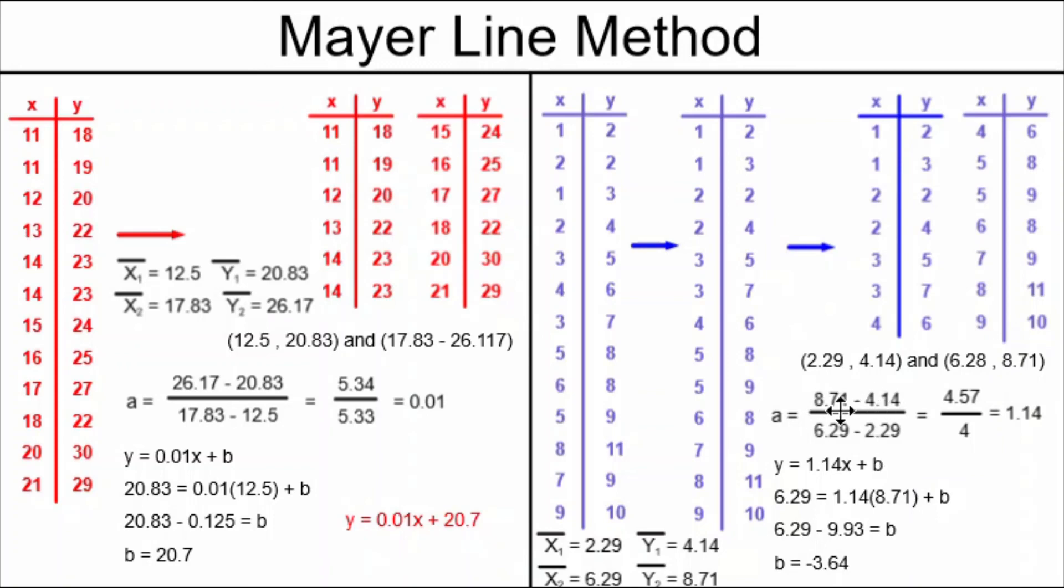We use one of the points from the slope formula. This time I used the point on the left. It doesn't matter which point you use to solve for b. And that gives us a final answer of y equals 1.14x minus 3.64 for the blue example. This is the Mayer-Line method. It is today's Daily Dose of Math. Please like, subscribe, and share.